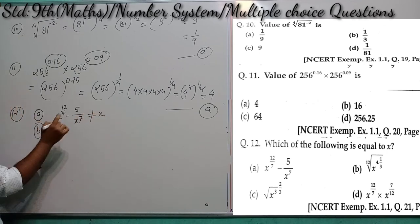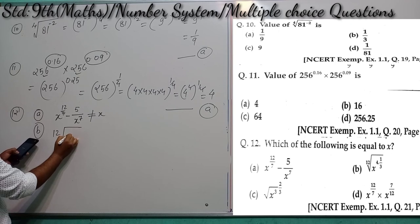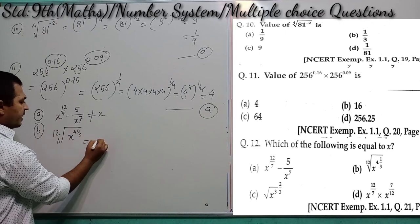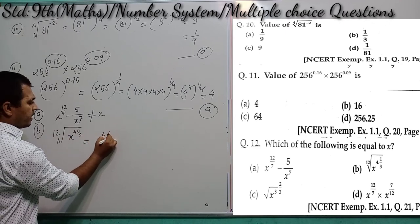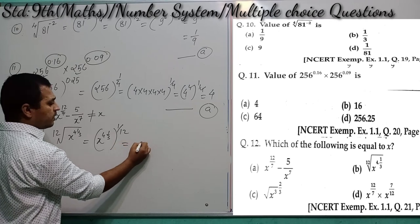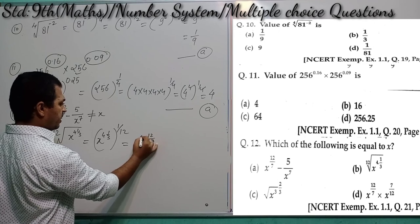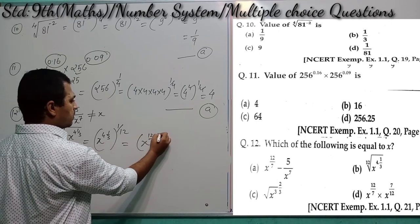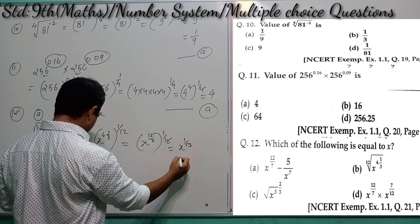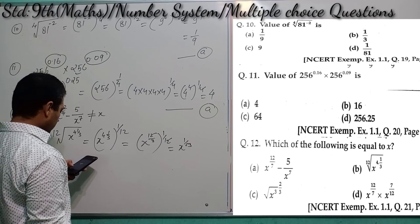Option B: ¹²√(x^(1/3)). Writing as (x^(4/3))^(1/12) = x^(4/36) = x^(1/9). This does not equal x, so option B is incorrect.